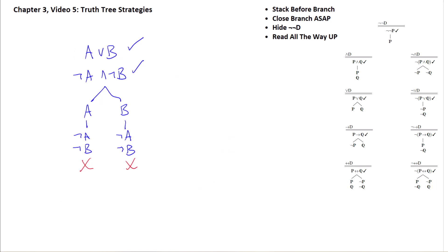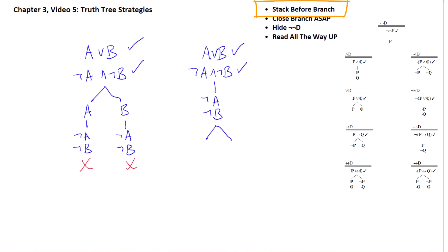We could be a little more efficient with the same two formulas. Since it's up to us which formula to decompose first, let's decompose the conjunction, which is going to stack immediately. Then when we decompose the disjunction we still get the branching, but we've saved ourselves a little bit of writing — we only write the stack once instead of twice.